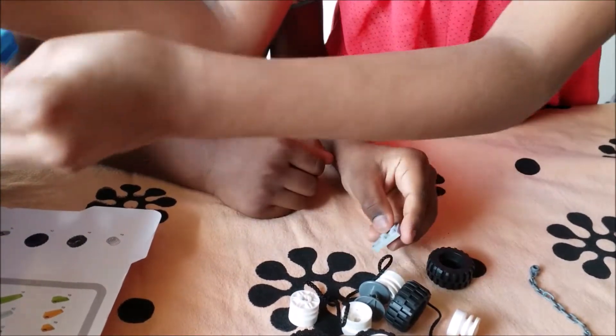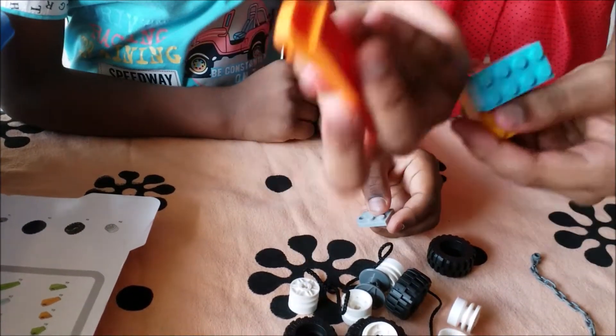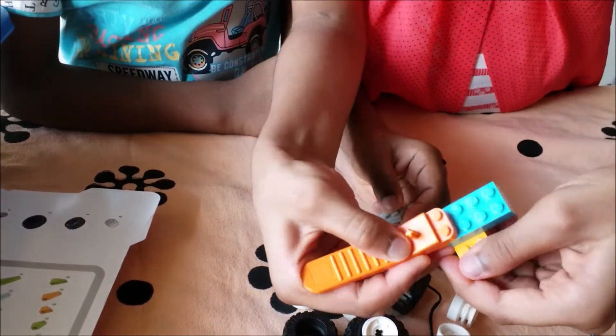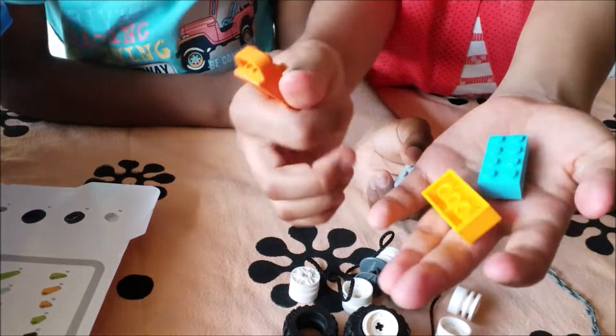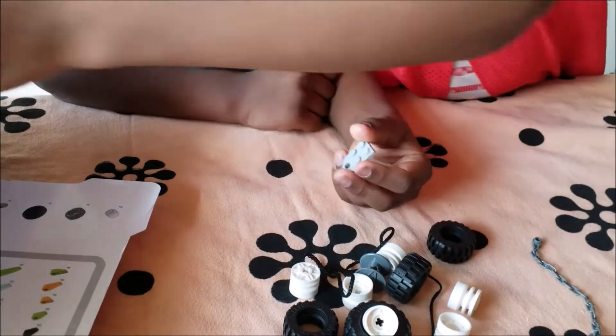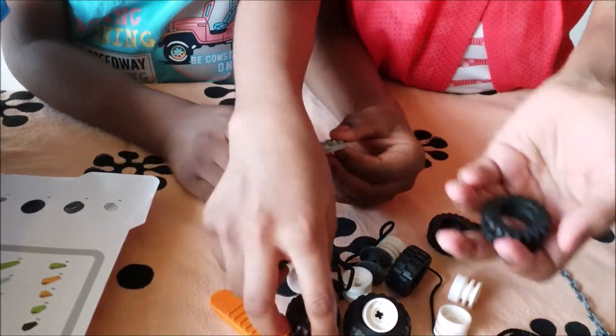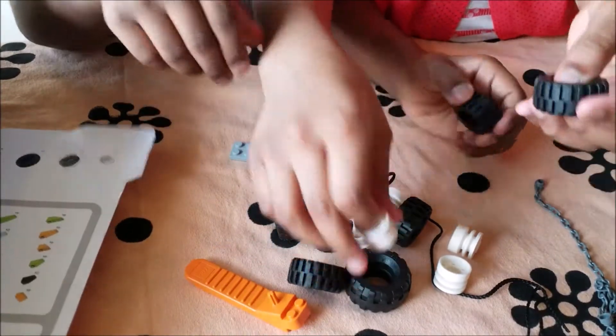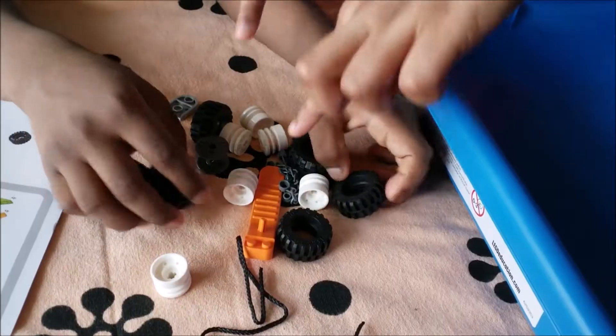There's this rope kind of thing in this box, and this is a part separator. For example, if two pieces are stuck together and won't come out, you could put this little thing over here and do it like this, and tada, these two pieces are separated. This is why we have this part separator. And these are the tires, and these white things go in the tires. Put these pieces into this box.